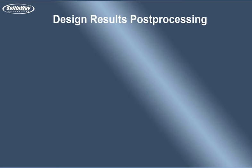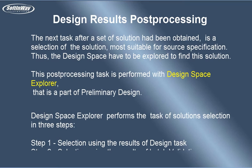The next task after a set of solutions has been obtained is the selection of the solution most suitable for the source specification. This post-processing task is performed with the design space explorer. Design space explorer performs solution selection in three steps: Step 1, selection using the results of the design task; Step 2, selection using the results of batch validation; and Step 3, final validation of the solutions with compressor maps.